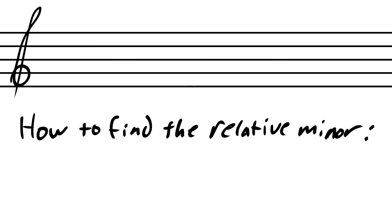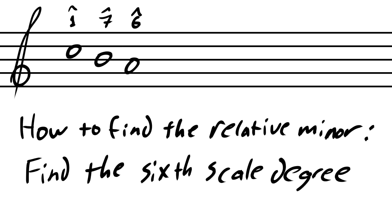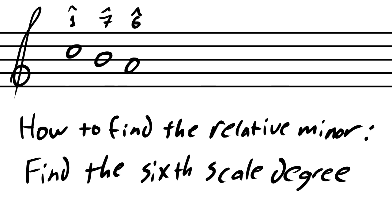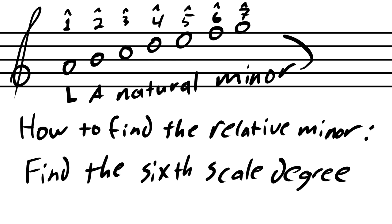To find the relative minor scale in a major scale, we just need to find the sixth scale degree and then run a diatonic scale from there. In this case, we count from scale degree one, which is C, and find scale degree six is an A. So now here's our minor scale.